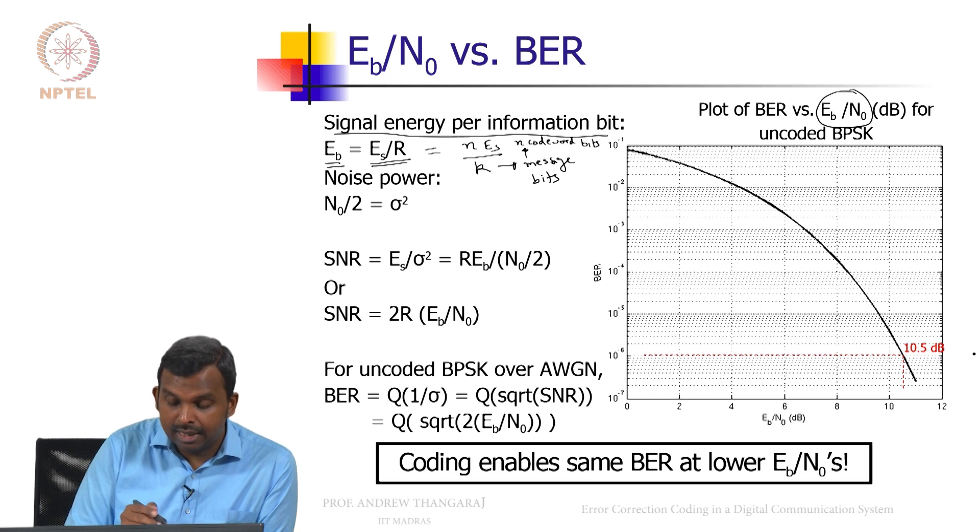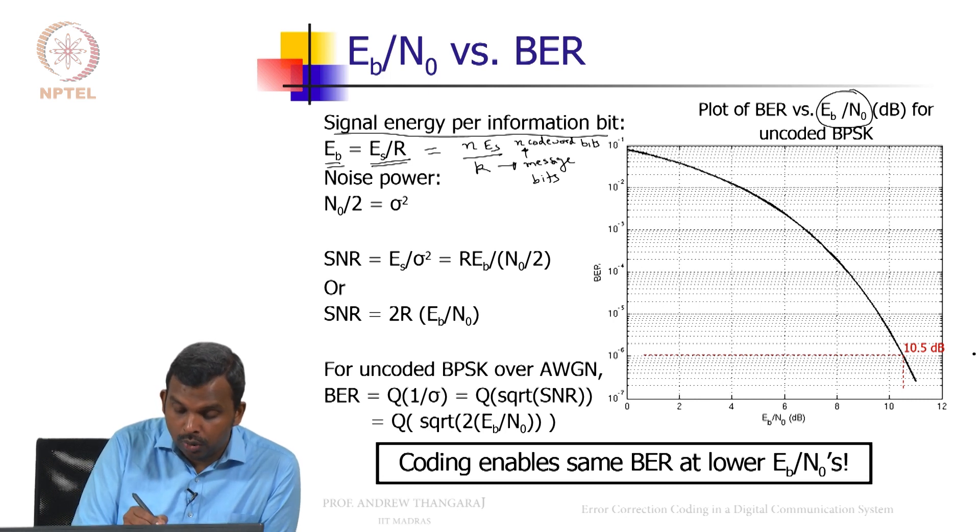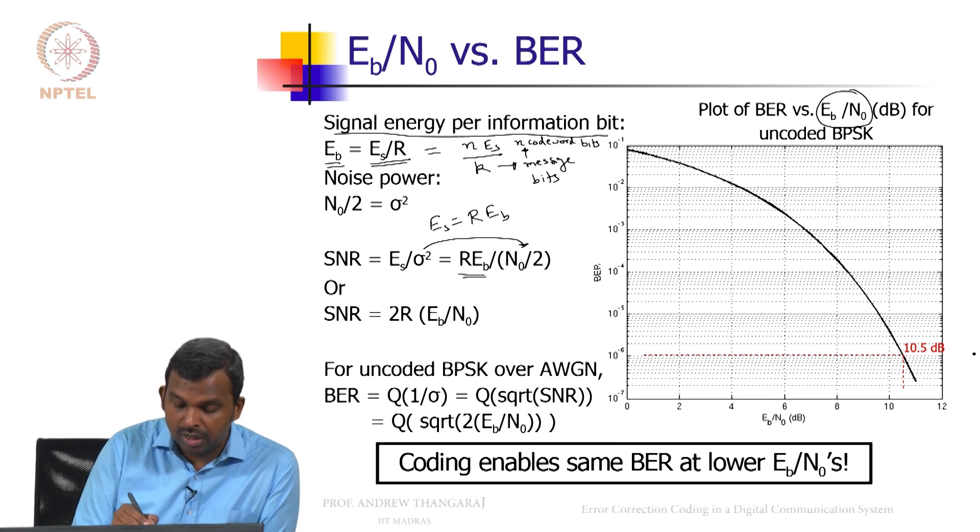So instead of Es, what did I do? Es is R times Eb. So I have put that here R times Eb and sigma square is N0 by 2. And if you simplify, you see that SNR is 2 times R times Eb over N0, or another way to write this is Eb over N0 is SNR divided by 2 times R.